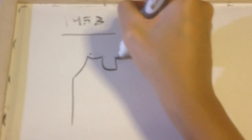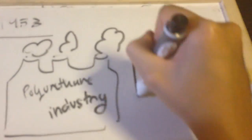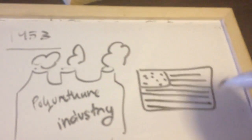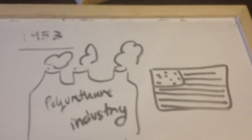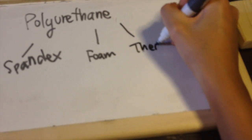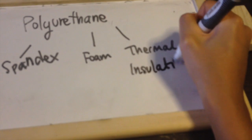Later, in 1953, polyurethane production began in the United States and became popular for foam insulation. In 1956, less expensive foams were introduced. So over the years, polyurethanes were developed into spandex fibers, foams, and thermal insulation.